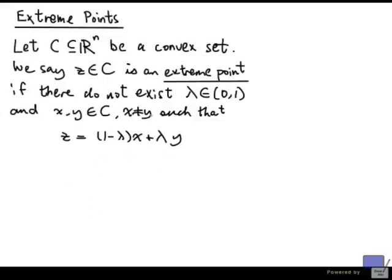It looks like it's not so easy to check if a point is an extreme point. I would say it's much easier to check if a point is not an extreme point because all you need to do is to come up with x and y and lambda satisfying this condition and show that z is this combination. So we are going to look at a characterization of extreme points in the case when the set C is a polyhedron. But before we do that, let's prove the following fact.